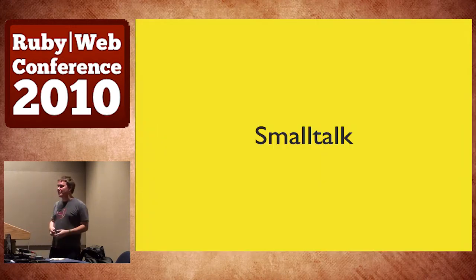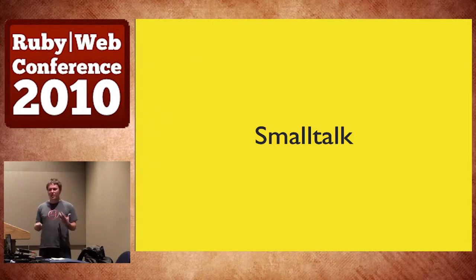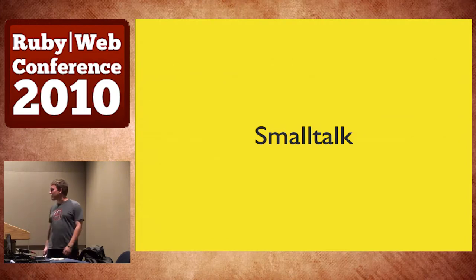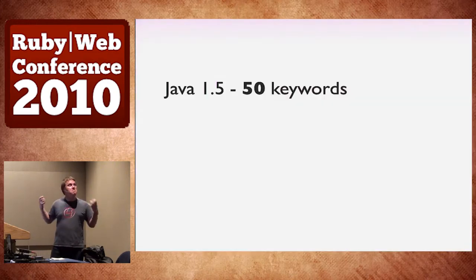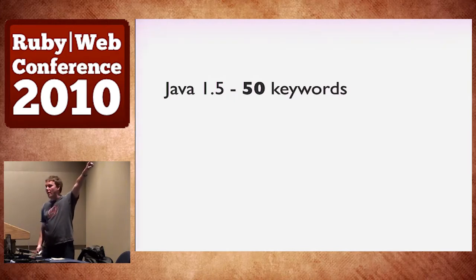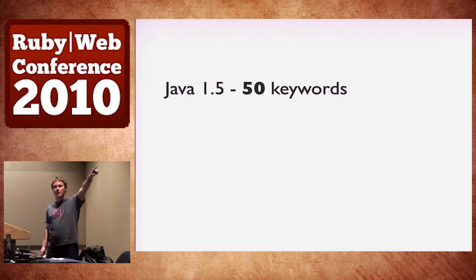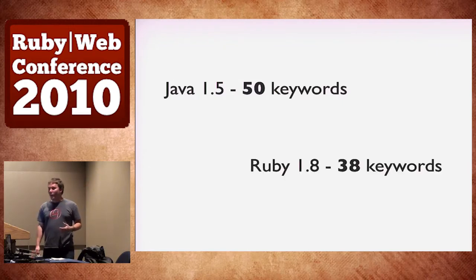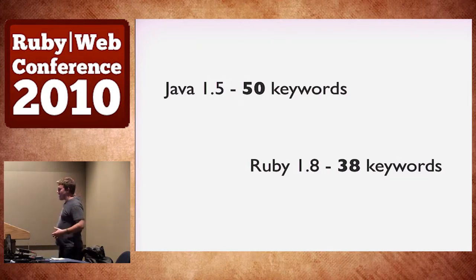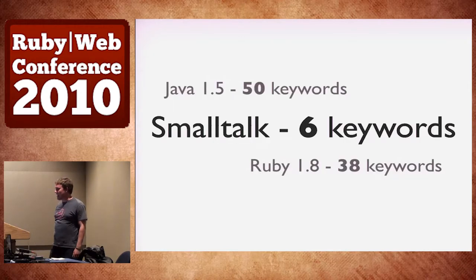Before you can code Seaside, you have to learn Smalltalk. Smalltalk is a massive language. Java 1.5 has 50 keywords, Java 1.4 had 49 keywords — feature bloat from version to version. Ruby 1.8 has 38 keywords. Smalltalk, massive beast that it is, has six — and in fact really only five: self, super, true, false, and nil. In modern implementations it also has thisContext.